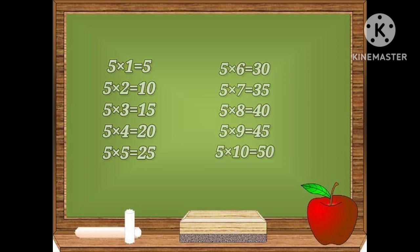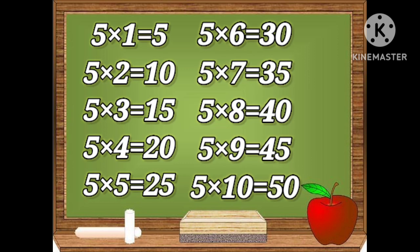Let's repeat the table. Five ones are five, five twos are ten, five threes are fifteen, five fours are twenty, five fives are twenty-five, five sixes are thirty, five sevens are thirty-five, five eights are forty, five nines are forty-five.